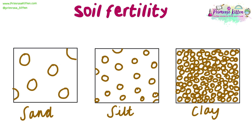You need a diagram representation of the different soil textures in your notes — you can use something like this. You need to know that sand particles are the largest particle and have large air spaces between them, whilst clay is the smallest particle with small air spaces between them, and silt sits somewhere between the two.